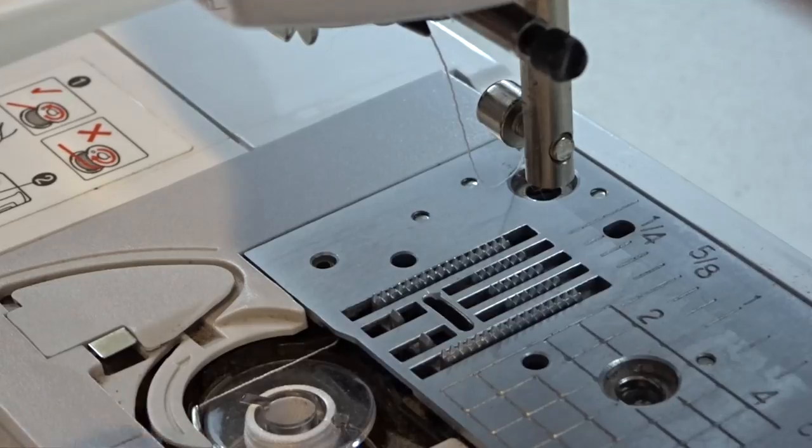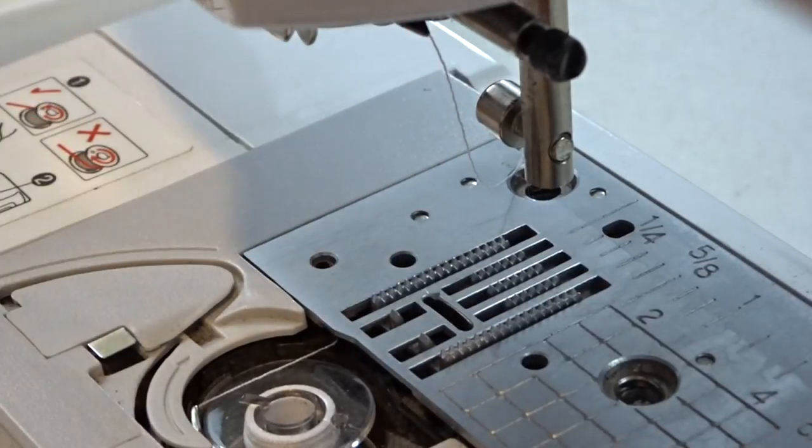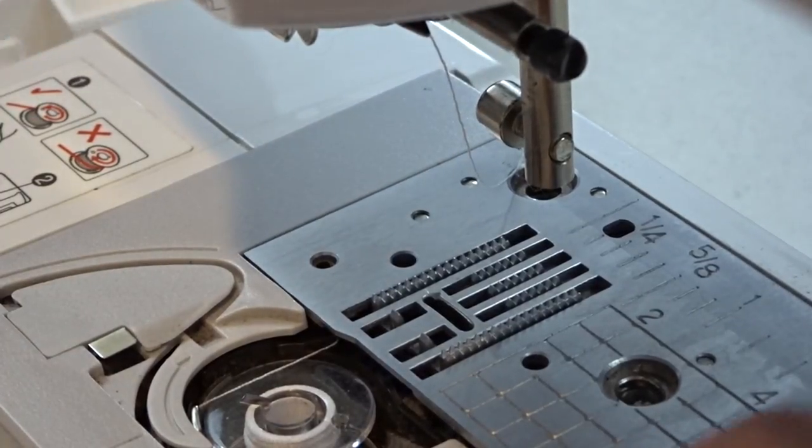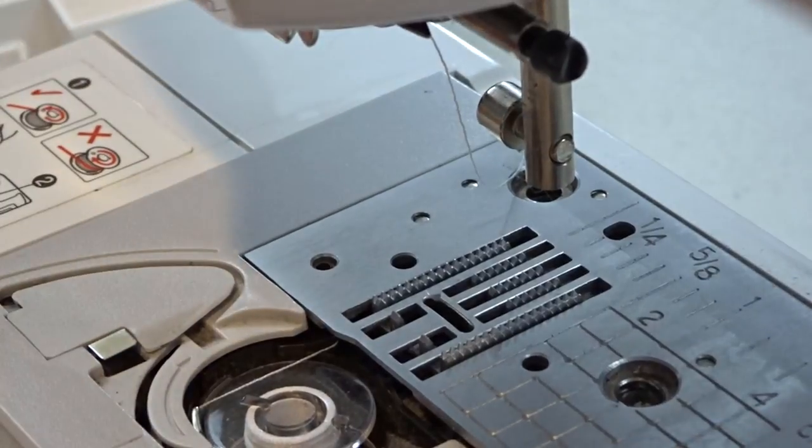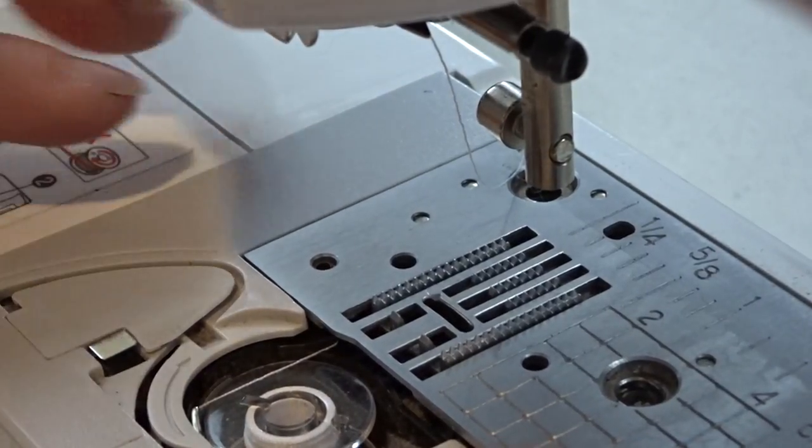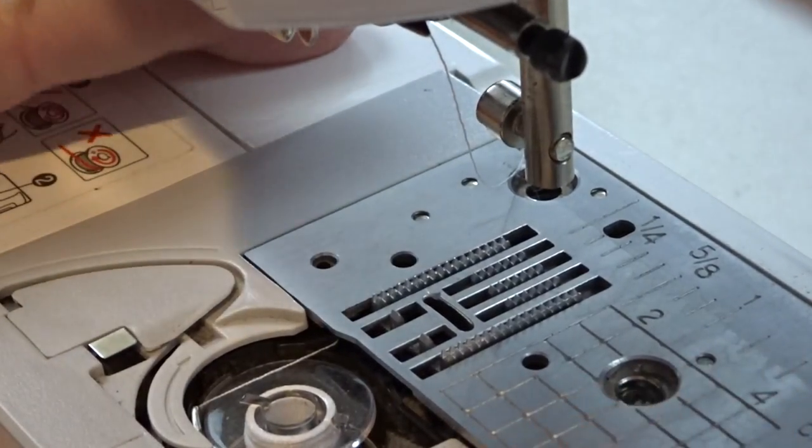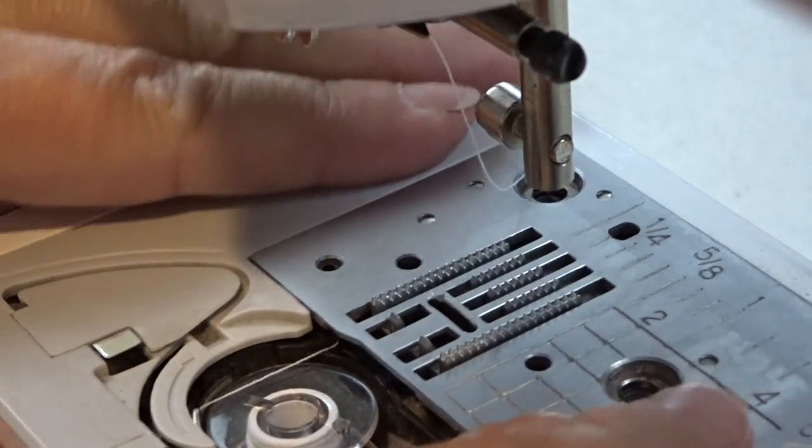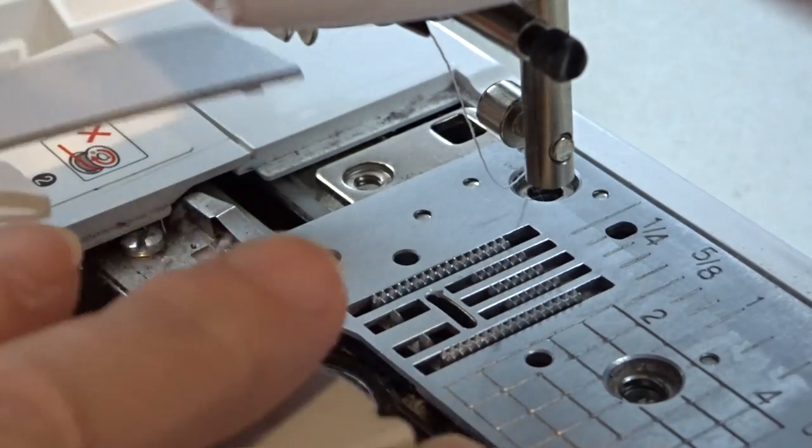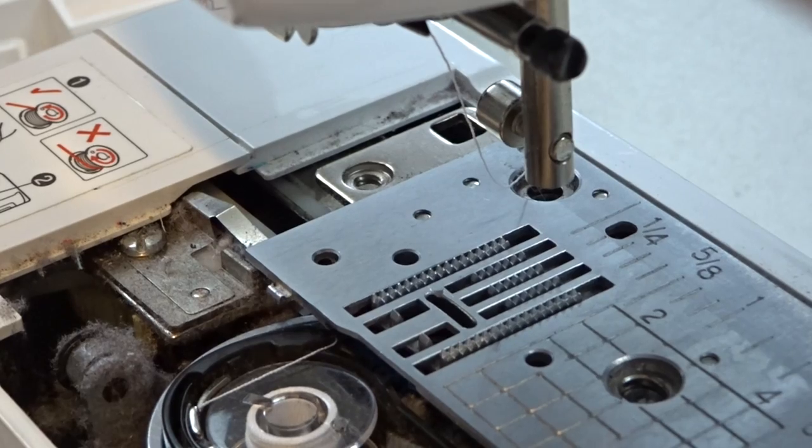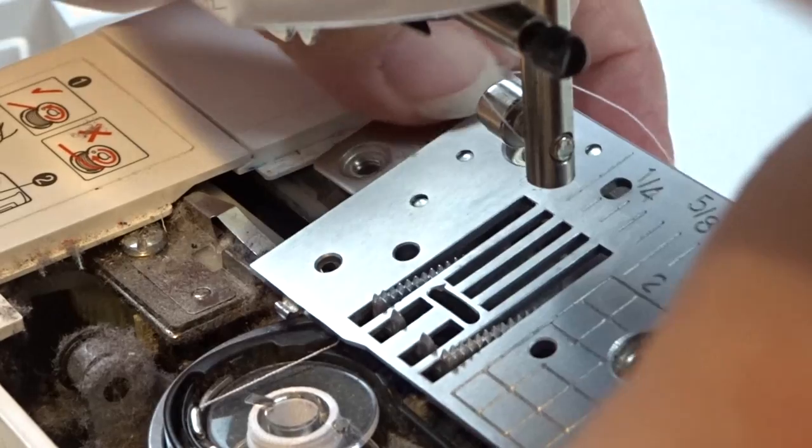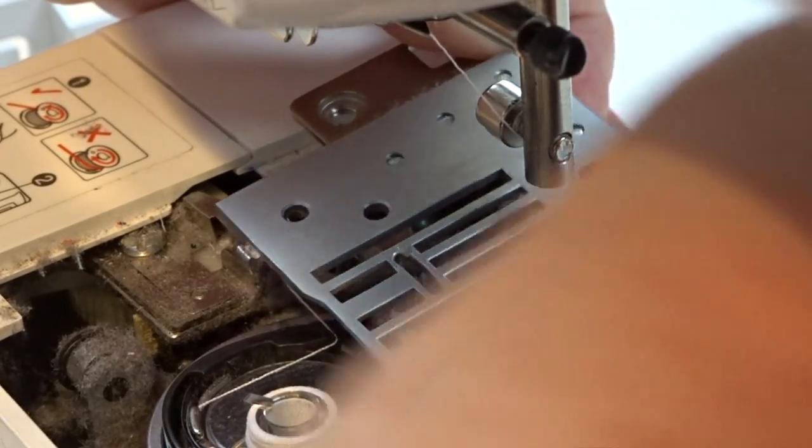A lot of times they will be very accommodating, especially if you say you'll buy the bobbin casing from them. Don't take anything out. Make sure before you remove anything besides the screws, you want to look and see how things are attached and how they're put together. This is like a puzzle here. These two pieces fit together.